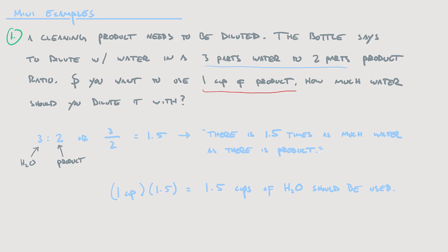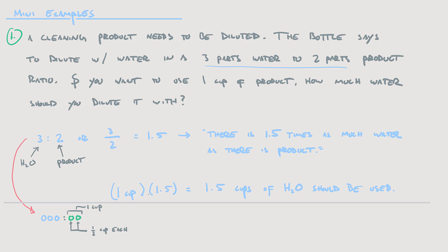There's 1.5 times as much water as there is product. If I'm using 1 cup, I'll just multiply by 1.5, which gives me 1.5 cups of water. You can also visualize this: I drew three blue circles for water and two green circles for product. The green circles represent the product — we know we have 1 cup — so each circle represents half a cup, meaning each of the three blue circles is also half a cup, giving 1.5 cups of water in total.